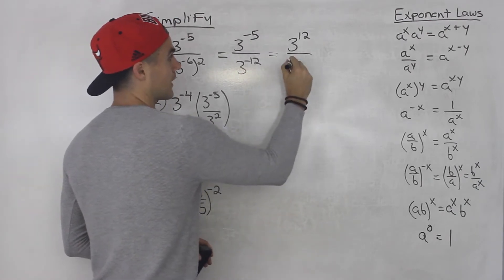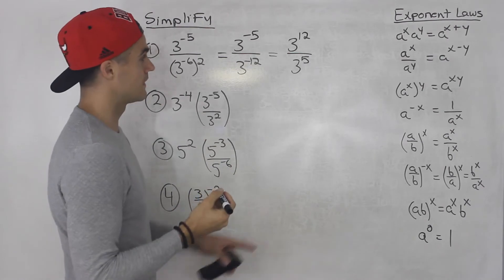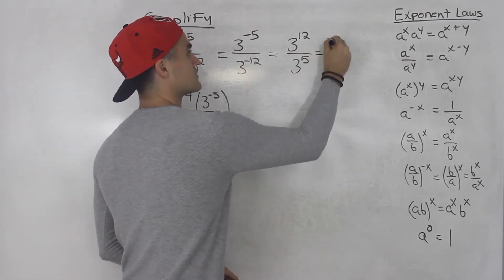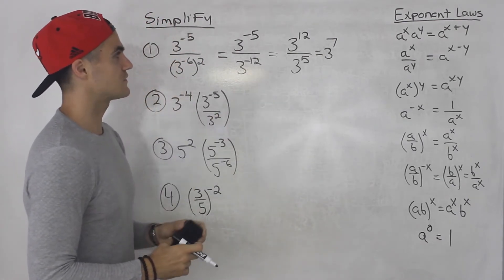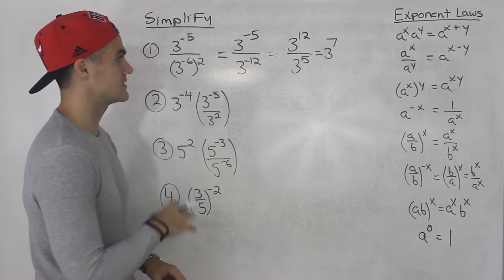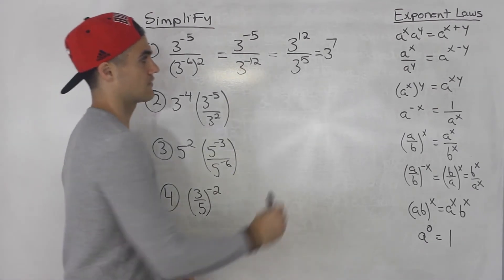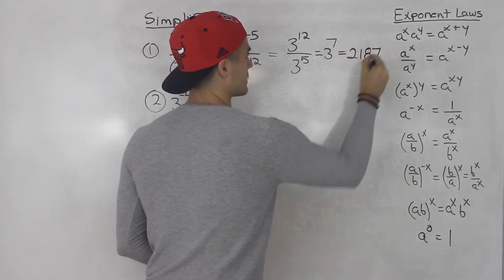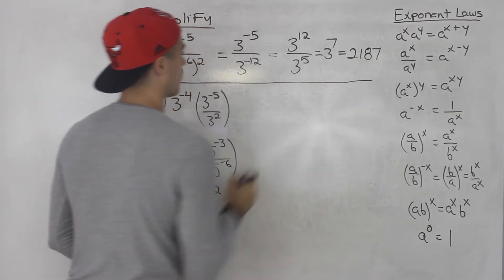The 3 to the negative 5 moves down to the denominator as 3 to the positive 5. Then 12 minus 5 gives us 3 to the power of 7, same result. I just find it easier to deal with positive exponents. And 3 to the power of 7 equals 2187 — that's the answer for number 1.